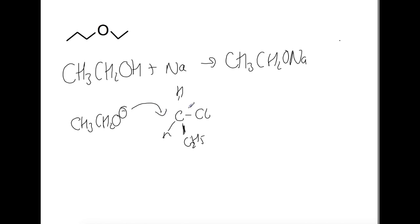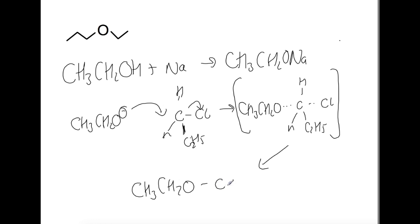That means we'll have an SN2 reaction to produce ethoxypropane. Equally, you could have used propane in the first step to produce your nucleophile and then reacted with chloroethane instead.